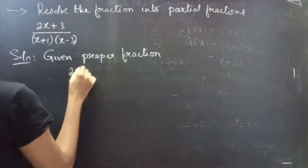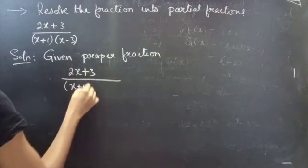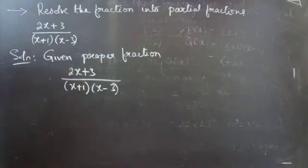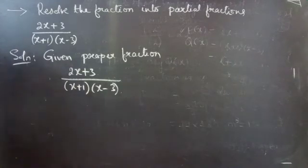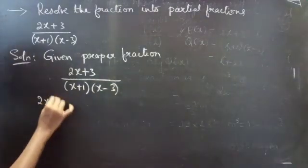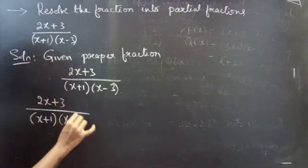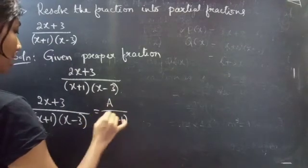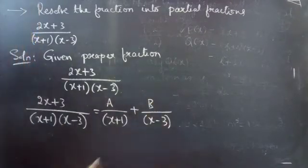The given proper fraction is 2x plus 3 by x plus 1 into x minus 3. Now we are going to resolve it into partial fractions. We can write it as A by x plus 1 plus B by x minus 3.